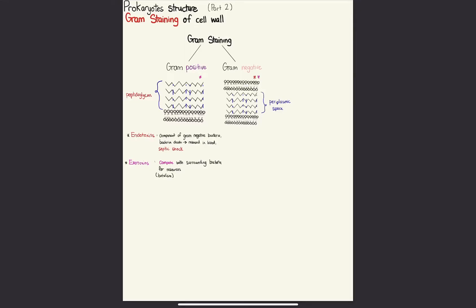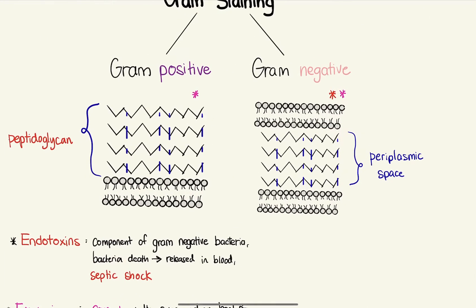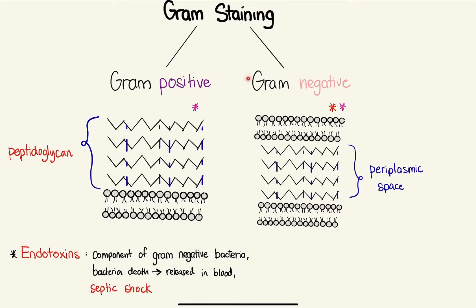Gram staining is a process that helped us discover the two kinds of cell walls in bacteria. The gram positive and the gram negative are both defined relative to the peptidoglycan, which is the overlapping linking of amino acids and sugars. The entire process of understanding these two types is understanding that the position of the peptidoglycan is different between the two.